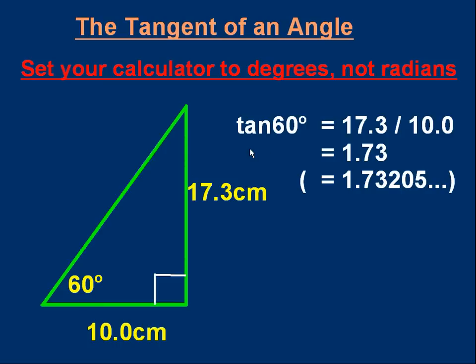And tan 60 is trivial. It's 17.3 over 10. It's nice and easy. It's 1.73. If you type tan 60 into your calculator, you should get 1.73205 and so on. There's a small difference because I'm only measuring to one decimal place. There's some small rounding error.